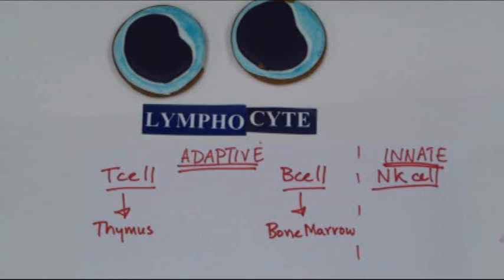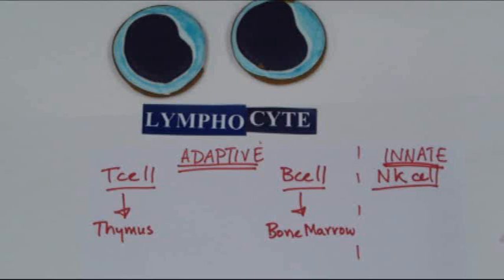The natural killer cell attacks virally infected cells and tumor cells. This is more part of the innate immune system, meaning that it does not need special priming — it just notices something is wrong and begins attacking at that point.